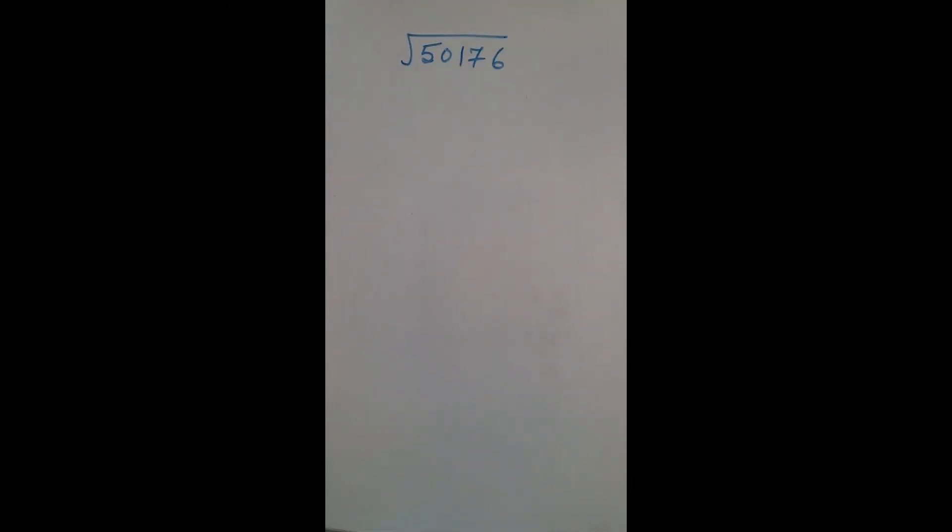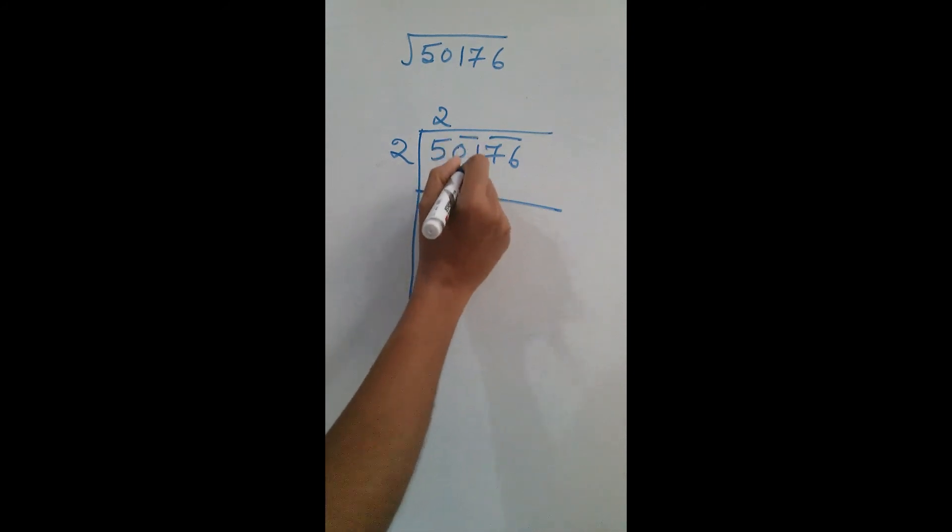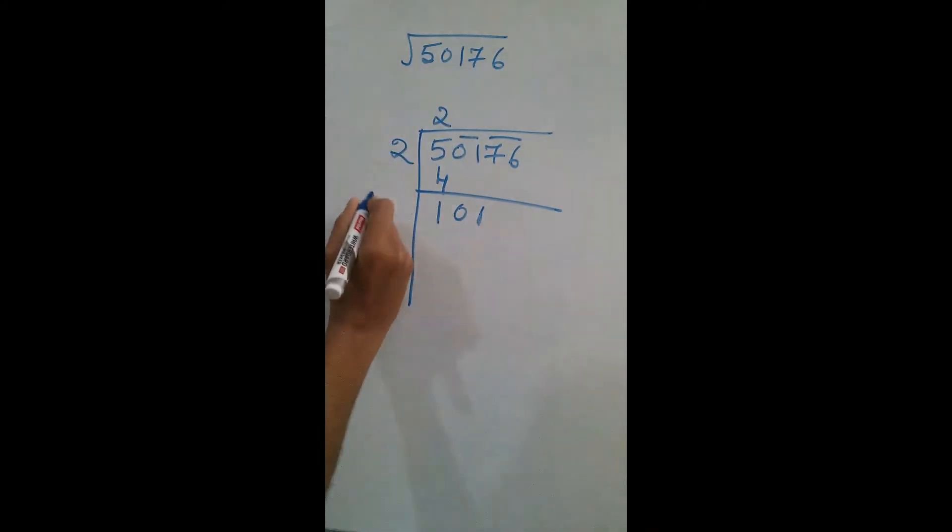In the next example, I am finding out the square root of 50,176. 50,176 from right to left, these two numbers one group, these two numbers one group. Now 2, 2 squared is 4. I am subtracting 5 minus 4 is 1. I am bringing 01 down.